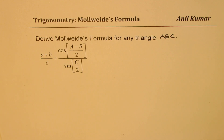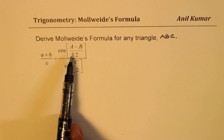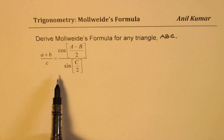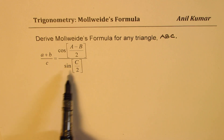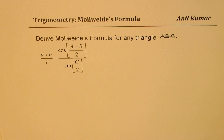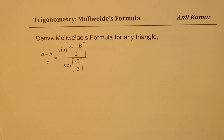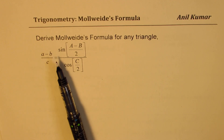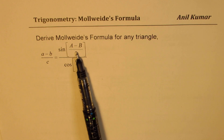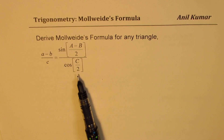The formula can be written as (A + B) / C equals cos of (A − B)/2 divided by cos of C/2. This is one form of the formula. The other form is (A − B) / C, which becomes sin of (A − B)/2 divided by cos of C/2.